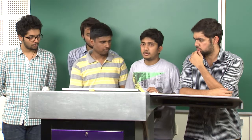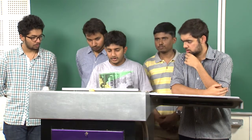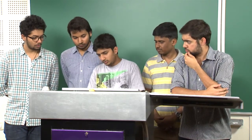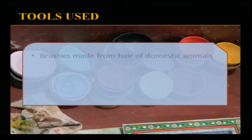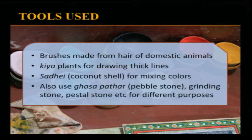These paintings are made with brushes usually made from the hair of a domestic animal — square hair brushes are commonly used. For fine brushes they use red hair, and for coarse brushes they use fellow hair. They use kiya plants for drawing thick lines and a coconut shell for mixing colors. They also use grassa pathal, pebble stone, grinding stone, and pastoral stone for different kinds of filling and other purposes.